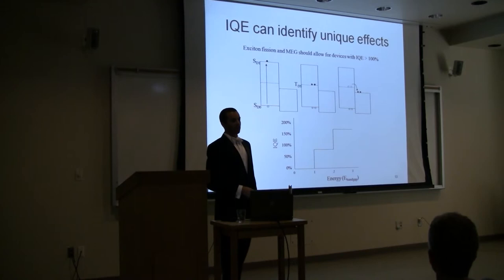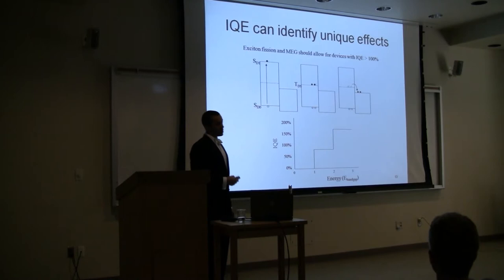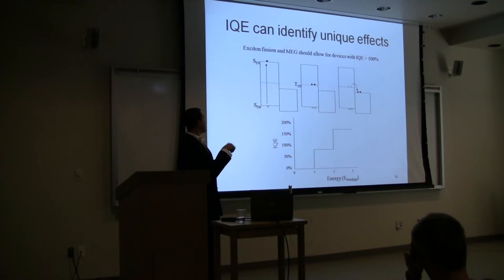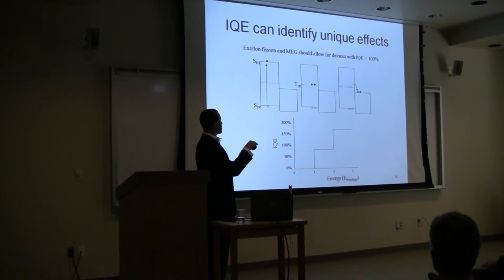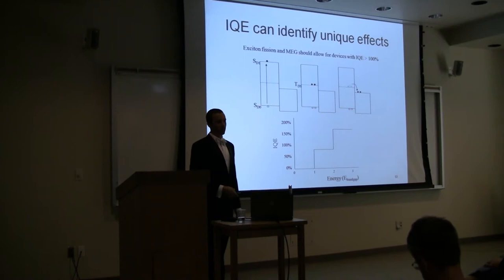IQE can also identify some unique and novel effects that are of interest to people in literature recently, including multiple exciton generation and single exciton fission processes, both of which can turn single excitons into multiple excitons through some quantum interactions. The interesting thing is you can actually get greater than 100% IQE because if you turn one single exciton to two triplet excitons, you can pull out two charge carriers for every one photon absorbed. You'd be interested in seeing a spectrum where you get a transition once you get to twice the energy of the material where you get 200% internal quantum efficiency.